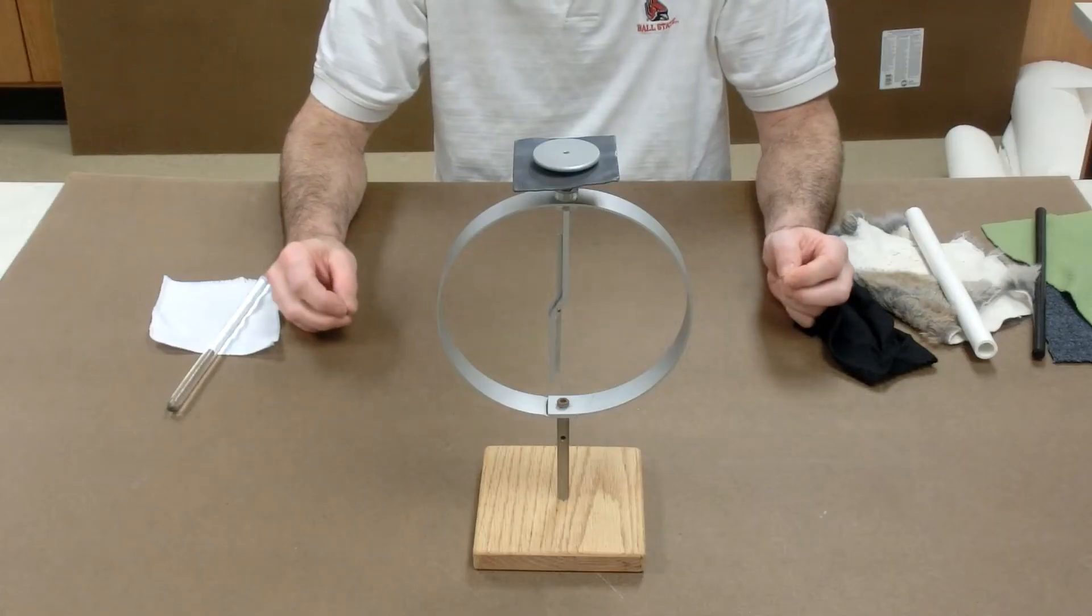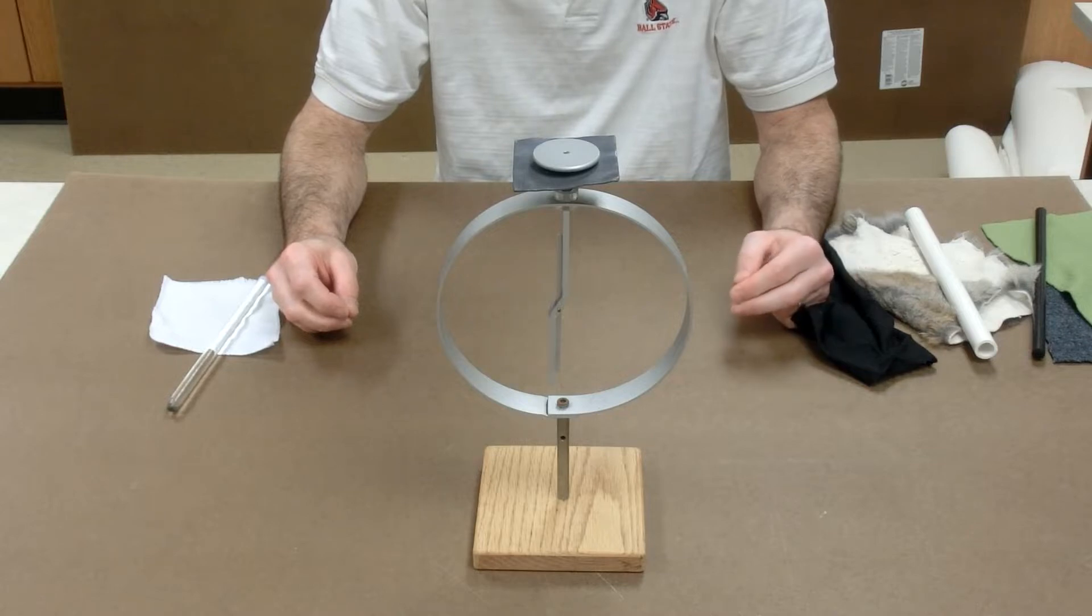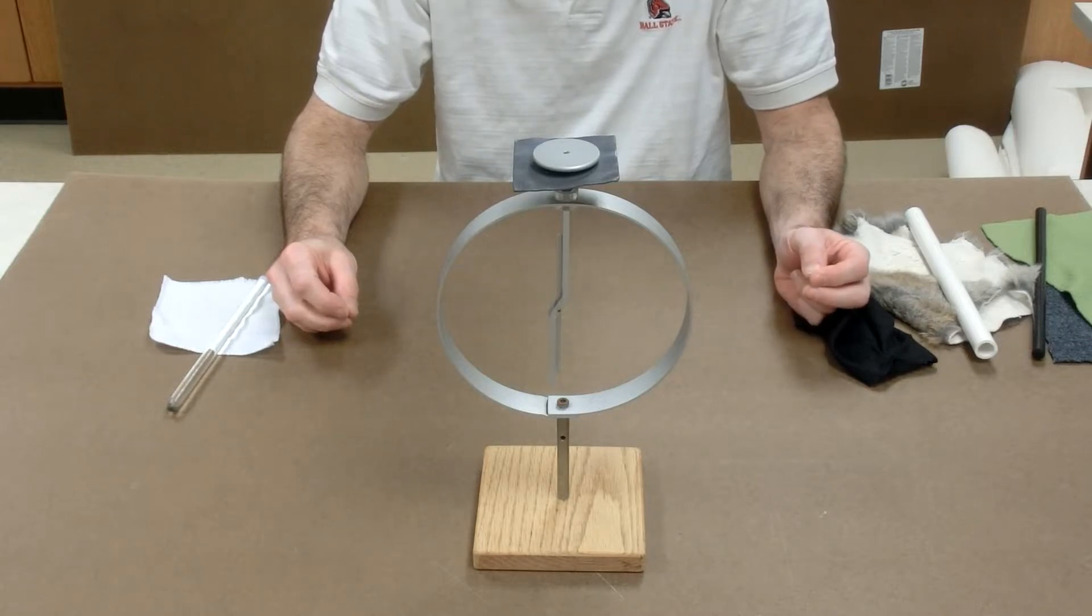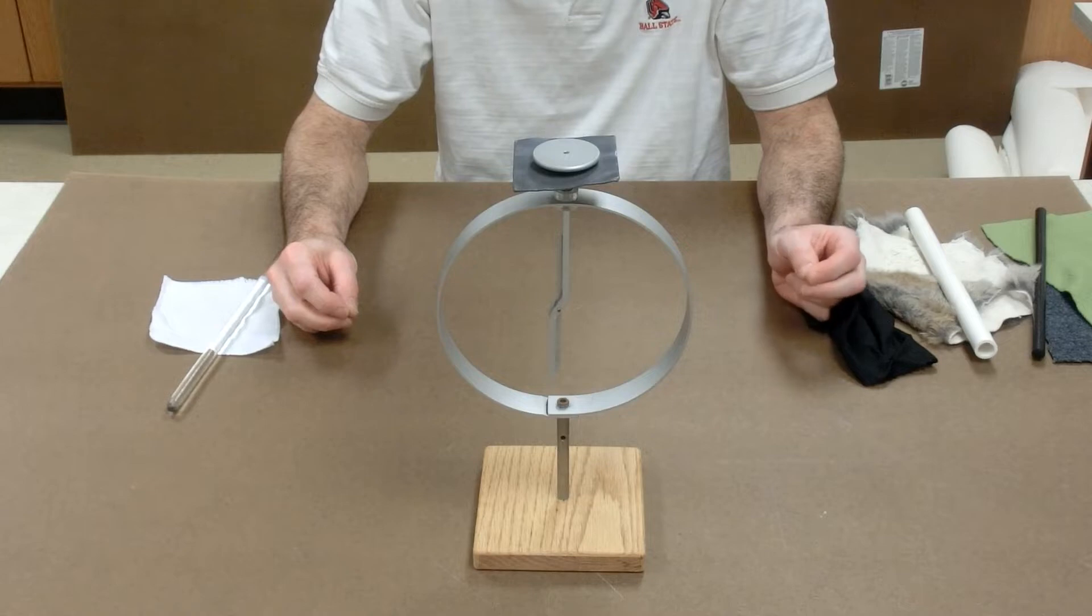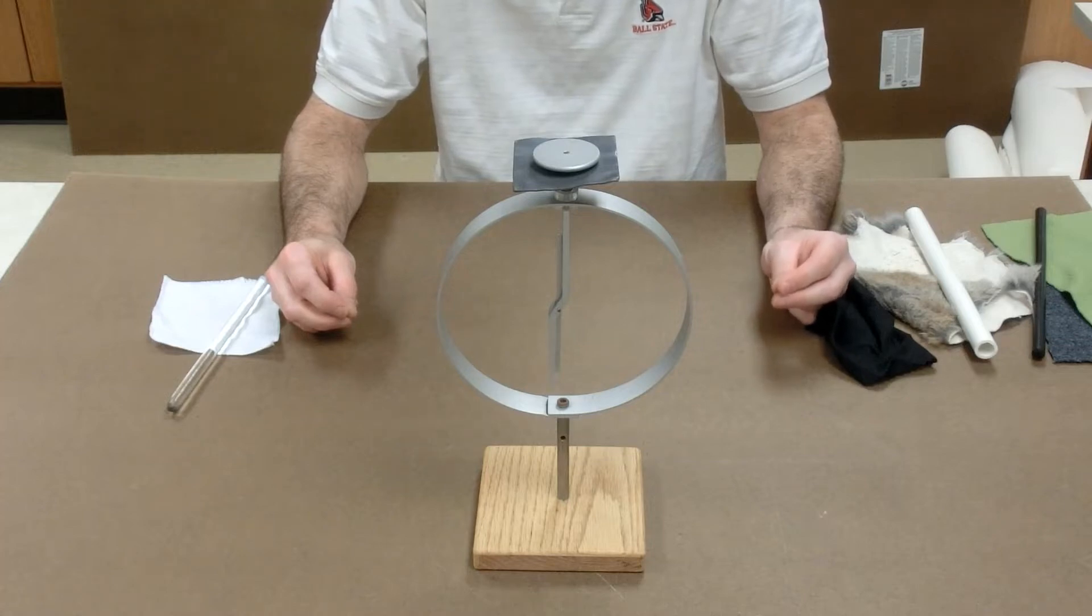So to charge an electroscope, we have to either put electrons in or take them out. In the method of conduction, our charged rod touches the knob of the electroscope, and the electroscope becomes the same charge as the rod.